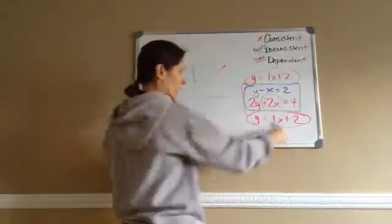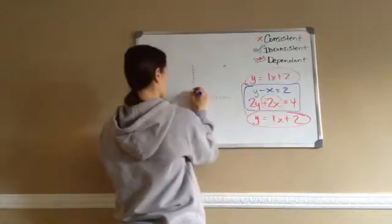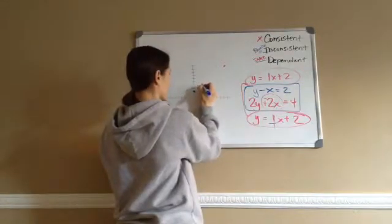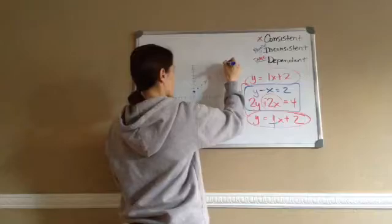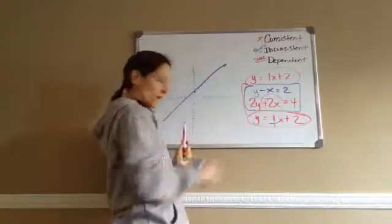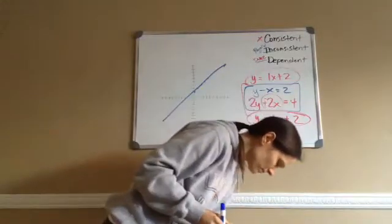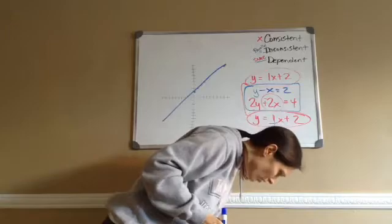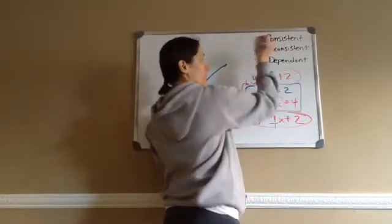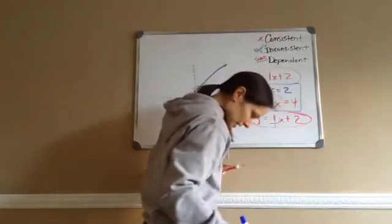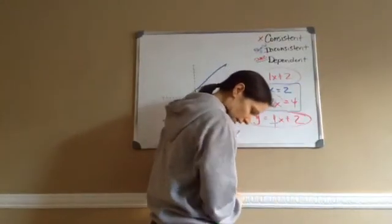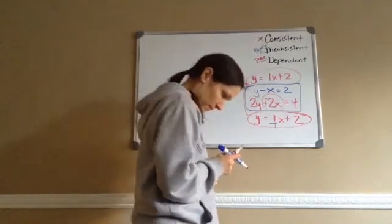If I were to graph y equals 1x plus 2, starting at 2 and going up 1 over 1, and then graph the other equation — it would be the same line. That's dependent: they depend on one another because they're the same. So to summarize: consistent lines share a middle intersection point as an ordered pair; inconsistent lines are parallel and never cross; and dependent equations produce just one line.